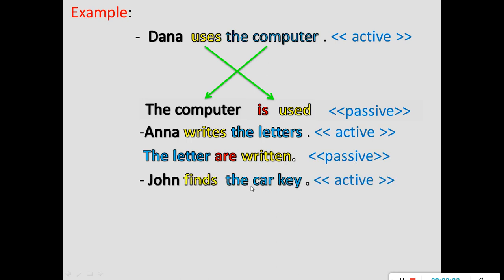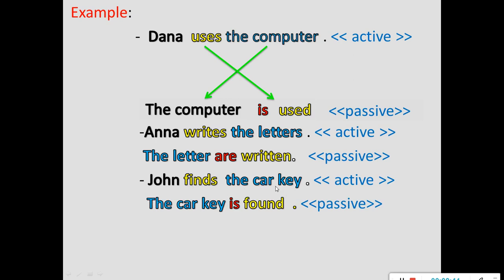Third example: 'John finds the kaki.' John is the subject, 'finds' is the verb, and 'the kaki' is the object. The sentence is Present Simple Active. To change it to Present Simple Passive, the object 'the kaki' comes to the front. We use 'is' because 'the kaki' is singular. The PP of 'find' is 'found.' So the passive sentence is: 'The kaki is found.'